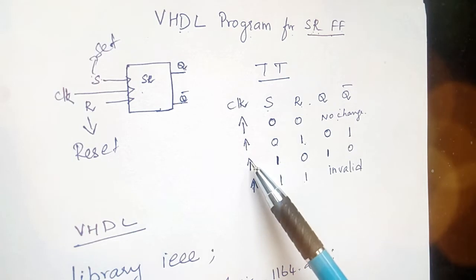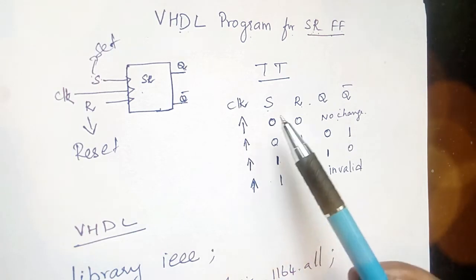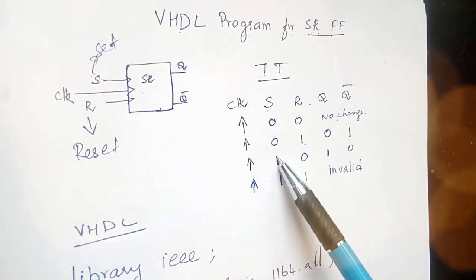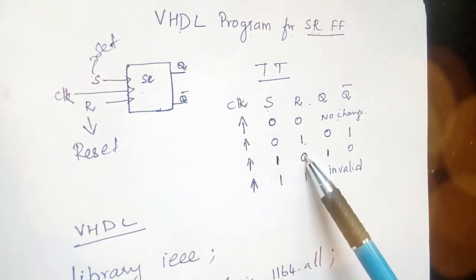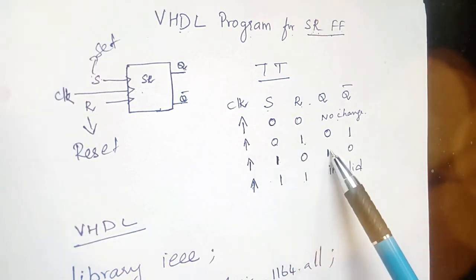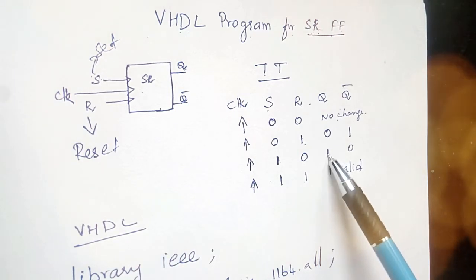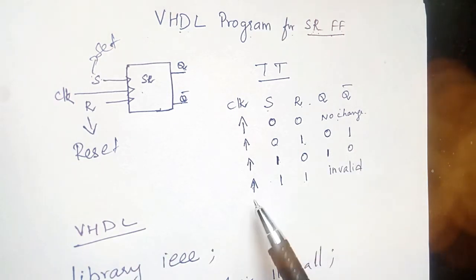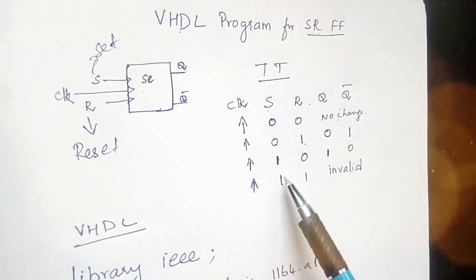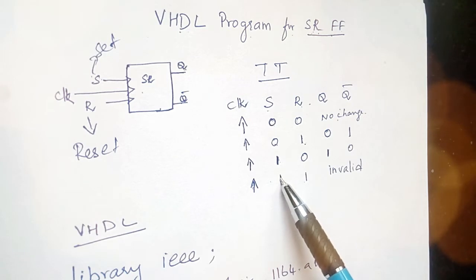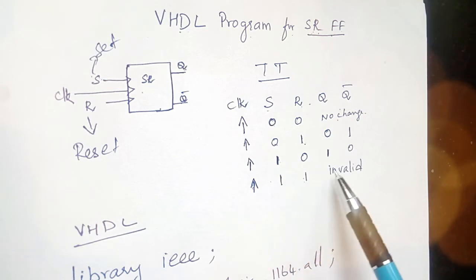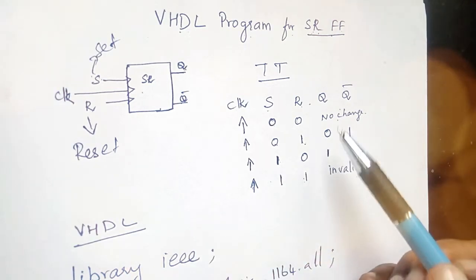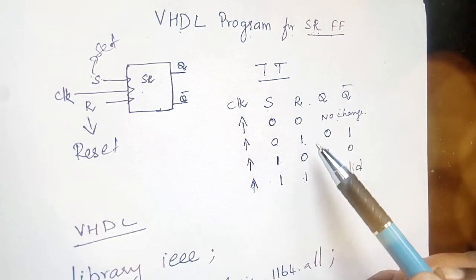When S is 1 and R is 0, the output Q is 1 and the complement Q bar is 0. When S is 1 and R is 1, it is an invalid condition.